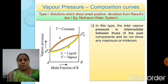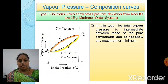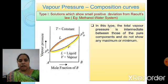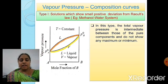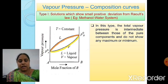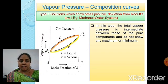Let us see vapor pressure-composition curves for Type 1 solutions, which show small positive deviation from Raoult's law. An example for this type is the methanol-water system. Vapor pressure is taken on the y-axis and mole fraction is taken on the x-axis.